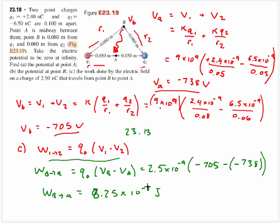We ask ourselves: does this make sense? Yes — the electric force has done positive work because it's a positive charge moving from a higher potential, which is the voltage at B, to a lower potential at point A.